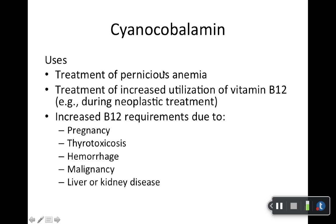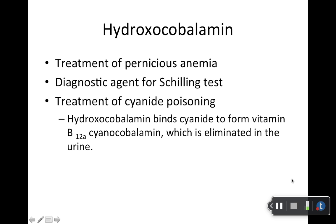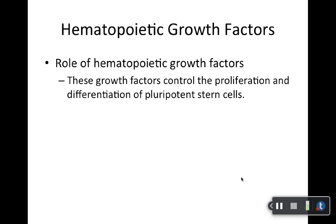We have two vitamin B12 preparations: cyanocobalamin and hydroxocobalamin. Cyanocobalamin can help with pernicious anemia specifically, and may be added during neoplastic treatment or whenever supplementation is needed — for example, pure vegans. Hydroxocobalamin is also used for pernicious anemia and as a diagnostic agent for the Schilling test. Definitely star this: hydroxocobalamin is the treatment of choice for cyanide poisoning. It basically binds to cyanide and helps eliminate it via the urine.